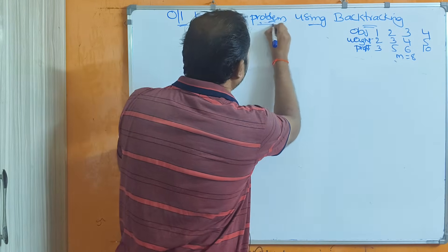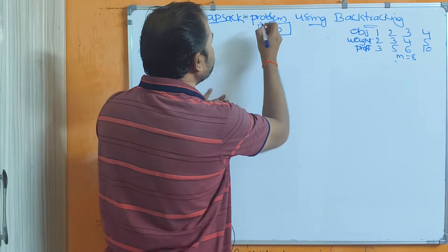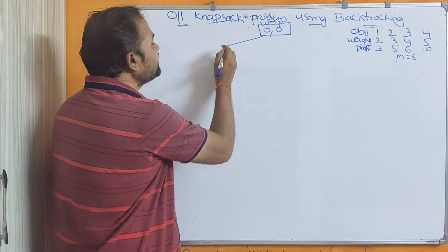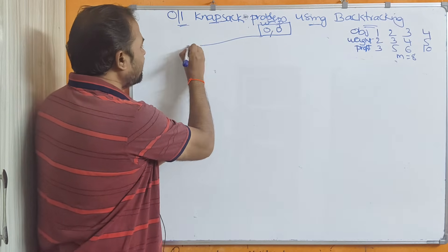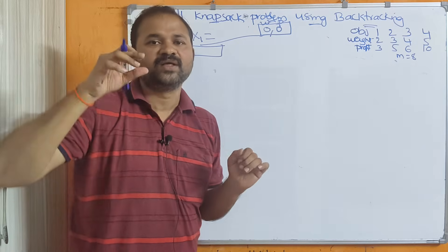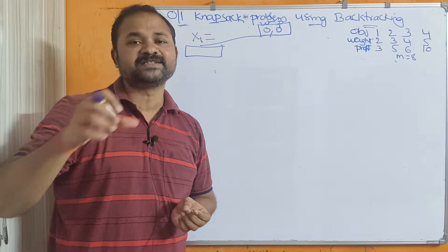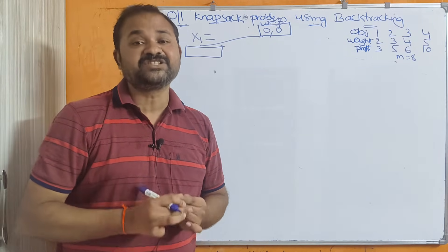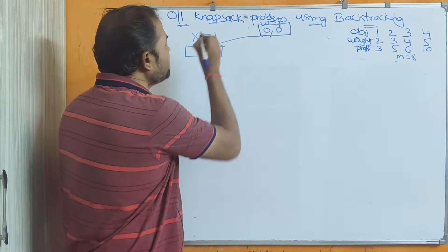Initially, the root node is (0,0), where the first 0 means weight and the second 0 means profit. The solution is represented by a solution vector with 4 variables: x1, x2, x3, x4. Each value may be either 1 or 0 — where 1 means we are choosing that object, and 0 means we are not considering that object. At the first level, x1=1 means we are considering the first object.